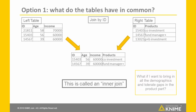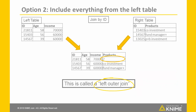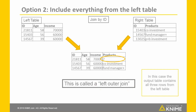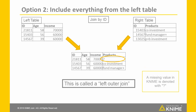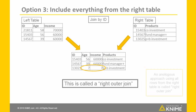What if I want to bring in all the demographics and tolerate gaps in the product part? That is the left-outer join. In this case, the output table contains all three rows from the left table, and where there is a cell missing from the right table, I just add a missing value. A missing value in KNIME is denoted with a question mark.